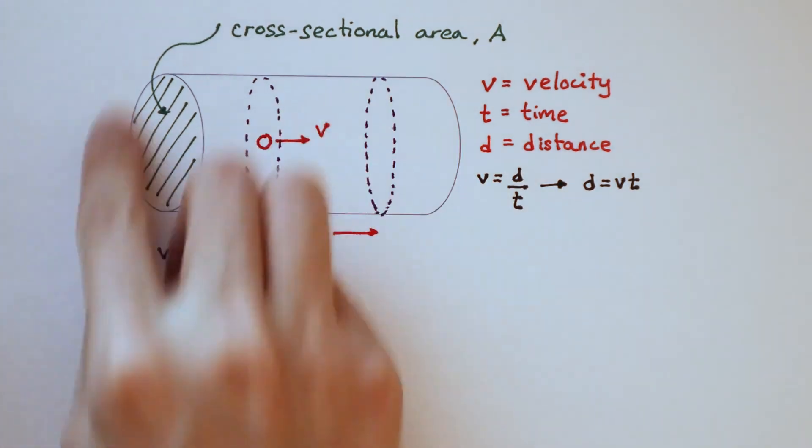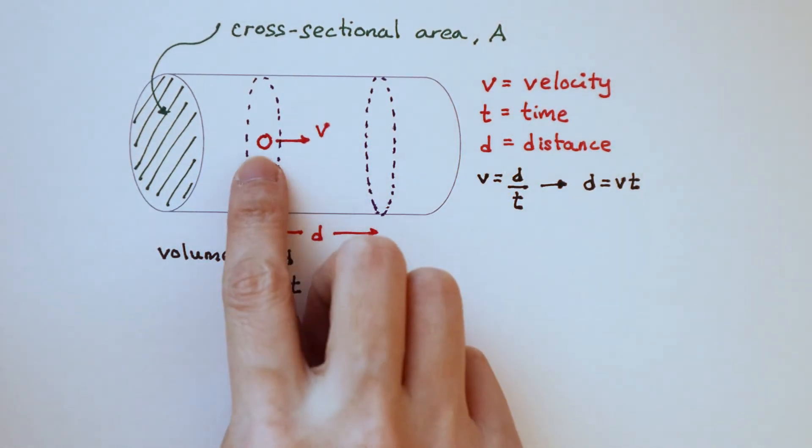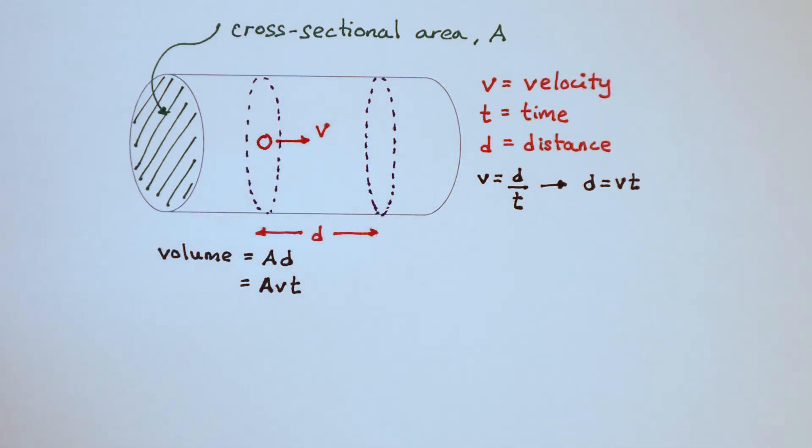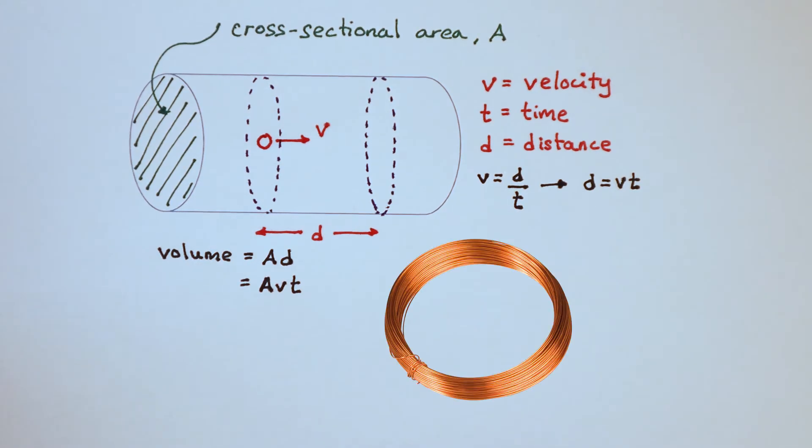Depending on what substance the conductor is made of, the number of electrons per unit volume will be different. Or you can think of it as how dense the electrons are packed into a certain space. For example, there are more free electrons in each cubic meter of copper than there are in silver.